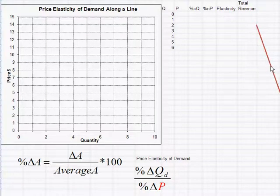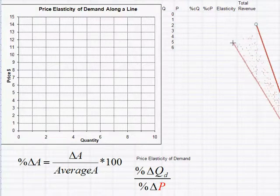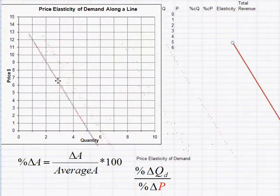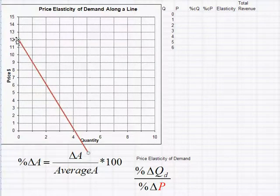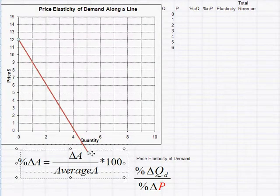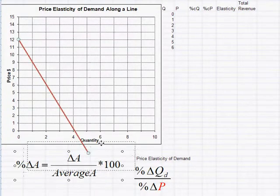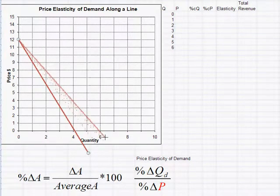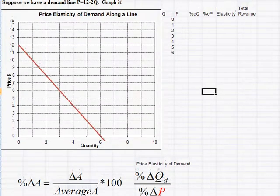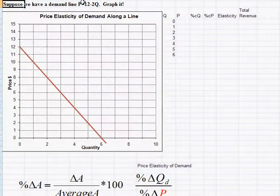Suppose we have an equation of a line: P = 12 - 2Q. This might be a demand function. The y-intercept is at price 12 when quantity equals 0, the slope is -2, so the line goes down 2 over 1, and the x-intercept will be at quantity 6.